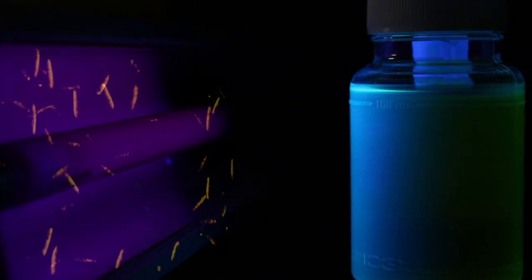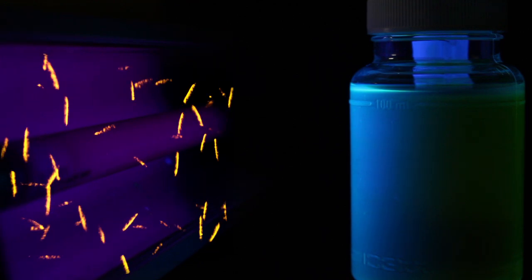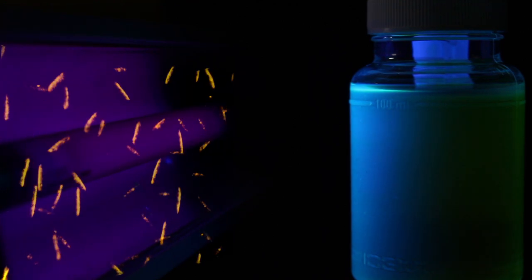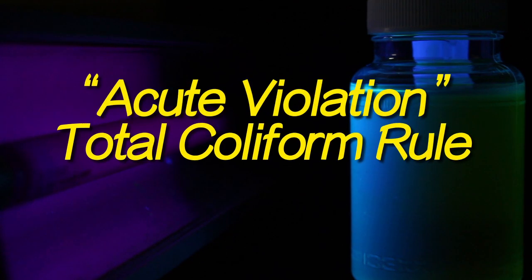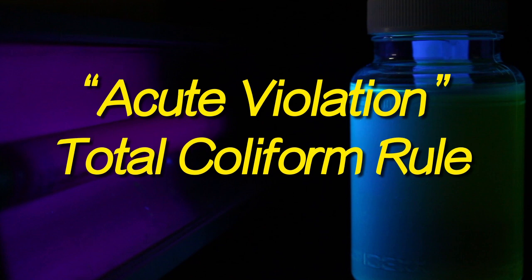If the blue color is evident, the sample is not only positive for total coliforms, but for the more critical E. coli as well. This could lead to what is called an acute violation of the total coliform rule.